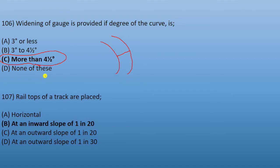Next question: the rail tops of a track are placed horizontally at an inward slope of 1 in 20, at an outward slope of 1 in 20, or at an outward slope of 1 in 30.